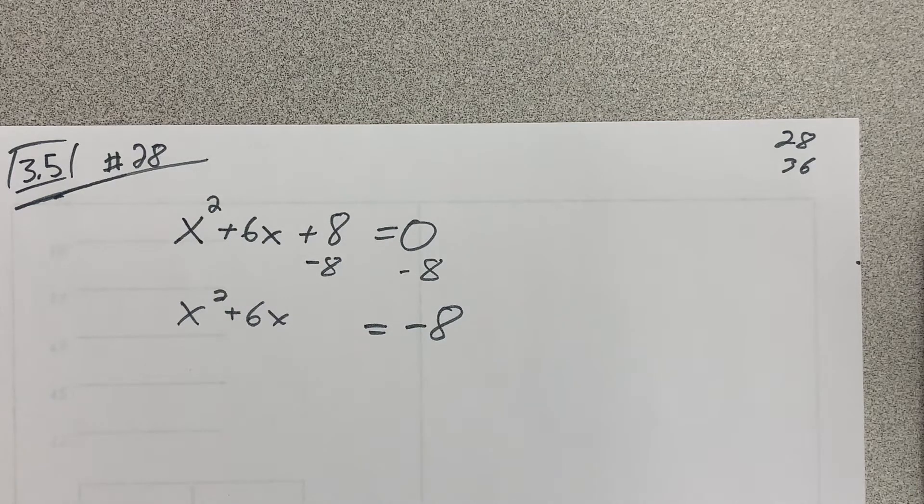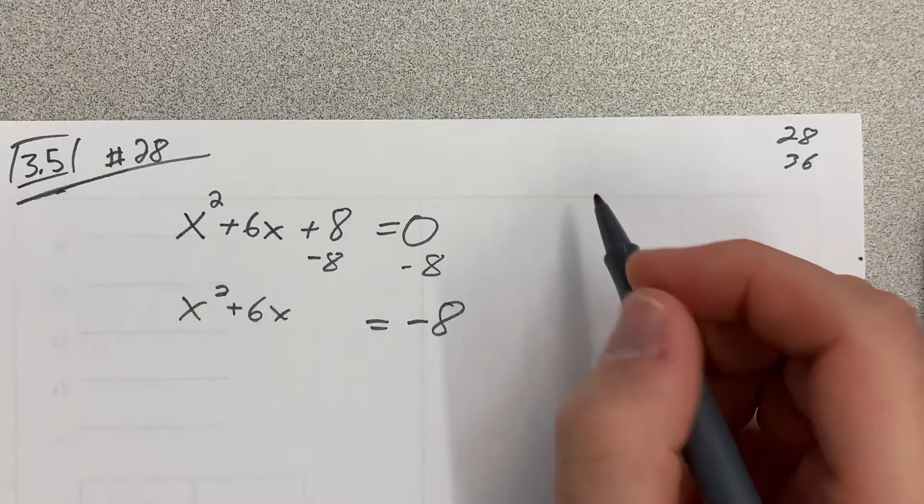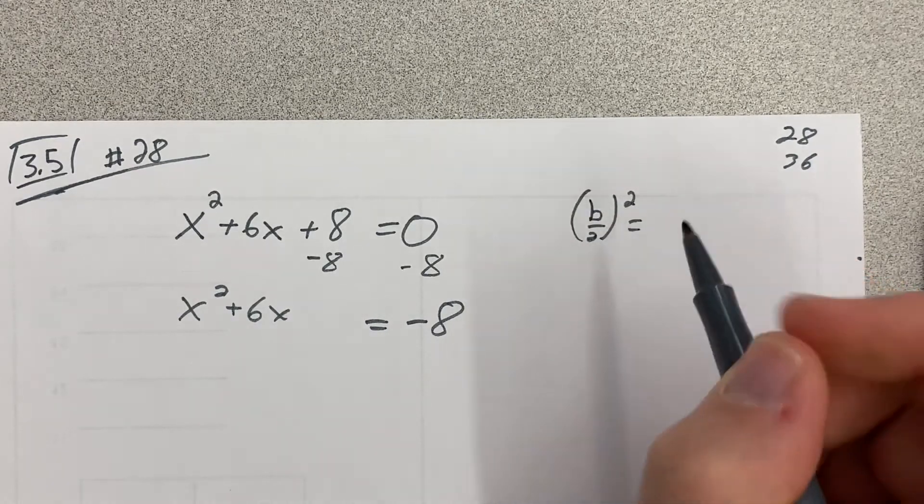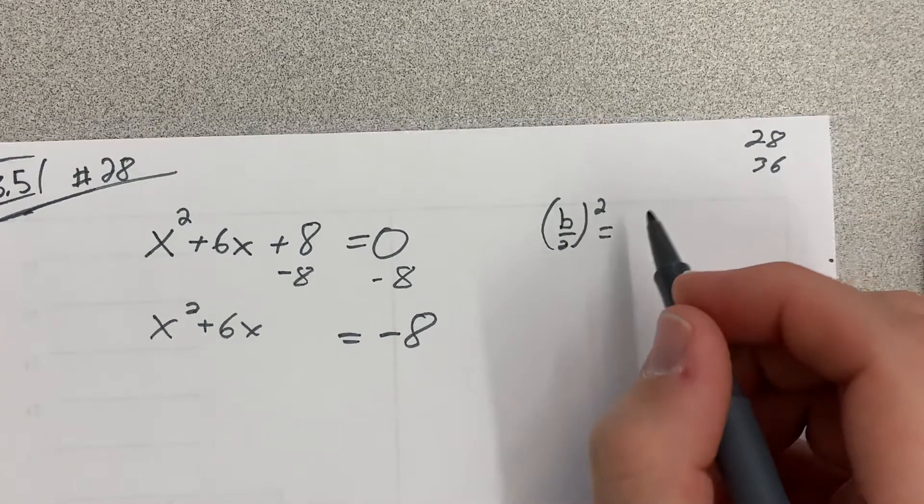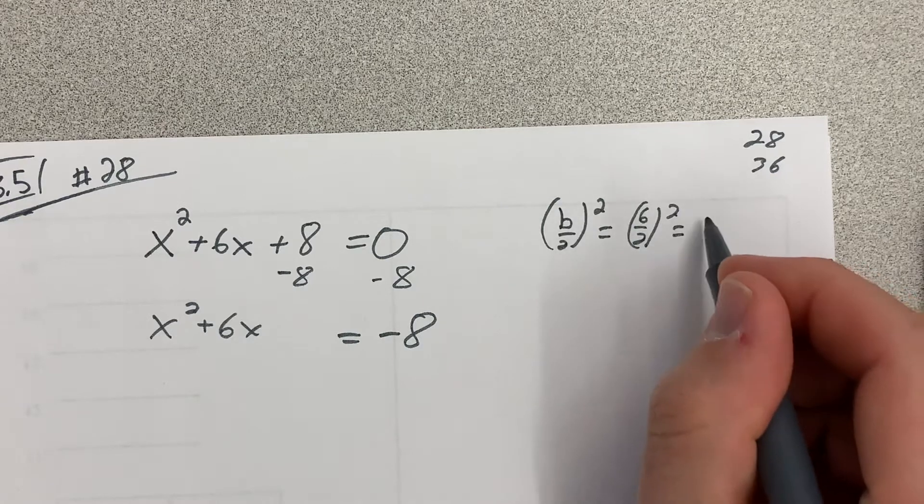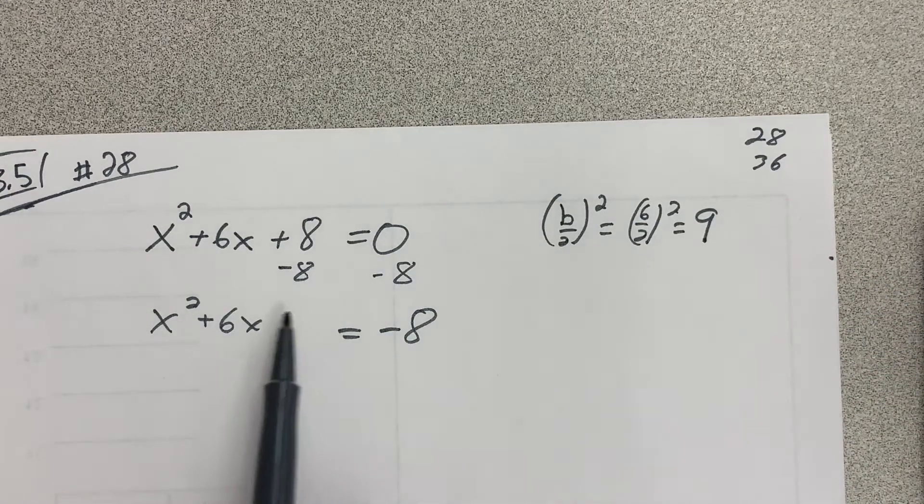The way that's more systematic and probably easier for students to remember is just to remember that this number over here has to be B over 2 squared. Okay, so what is B? Well, B is 6. Alright, so that's 6 over 2 squared. So that would be 3 squared, which would be 9. Okay, so that tells you the number that you're going to add to make this a perfect square.